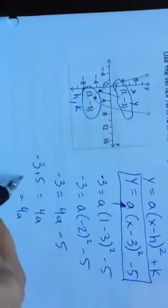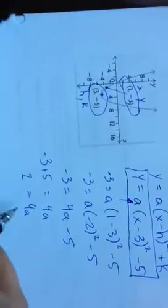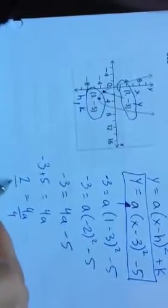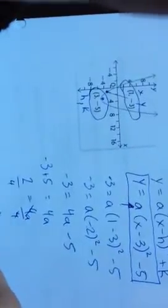So I get 4a is equal to positive 2. Divide out the 4 from both sides, and so I get a is equal to 1 half, or we're okay to write 0.5 if you wish.